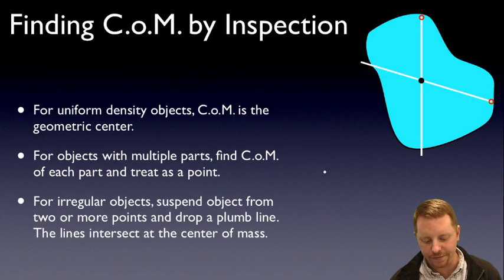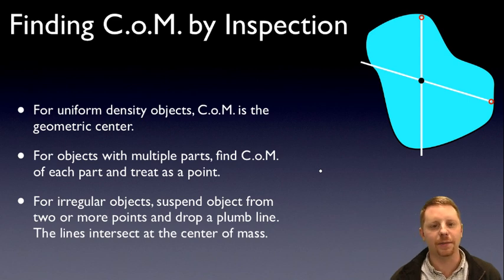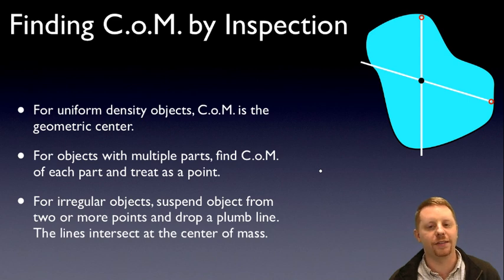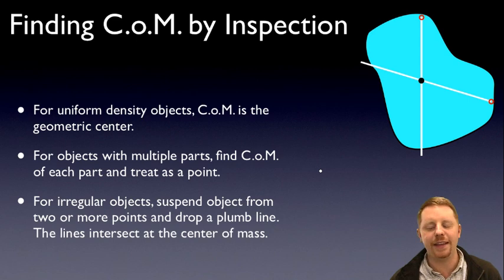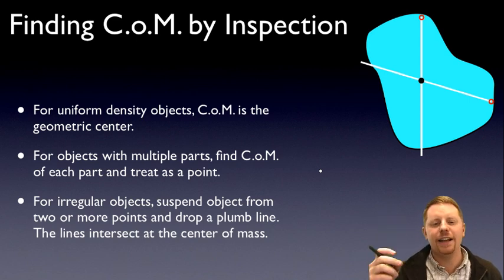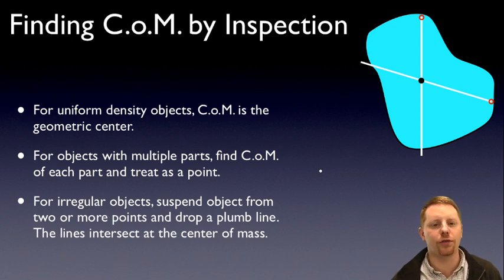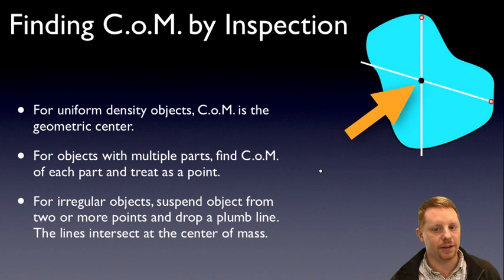Let's talk about how we find center of mass by inspection. For uniform density objects, the center of mass is just going to be the geometric center — common sense. For objects that have multiple parts, we can find the center of mass of each part, treat that as a point particle with some given mass, and then go into our calculations. For irregular objects, we can suspend the object from two or more points, hang a plumb bob from it, hang a line down toward the center of the earth, and draw that imaginary line. Then hang it from another point and do the same thing. All of those lines are going to cross at the center of mass, so experimentally you can find it that way.